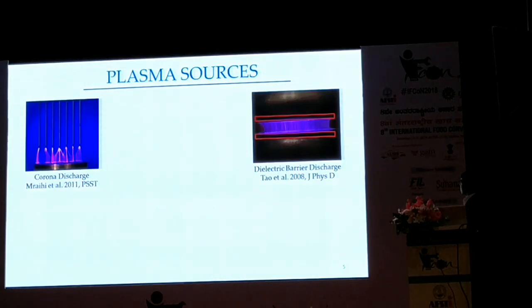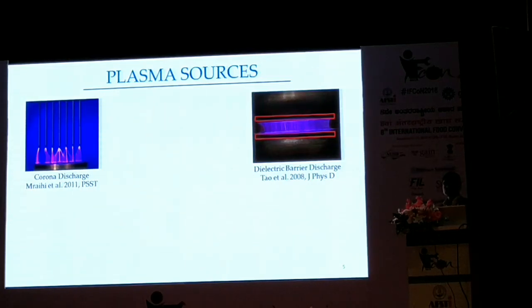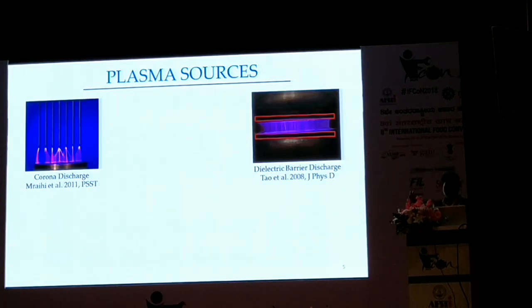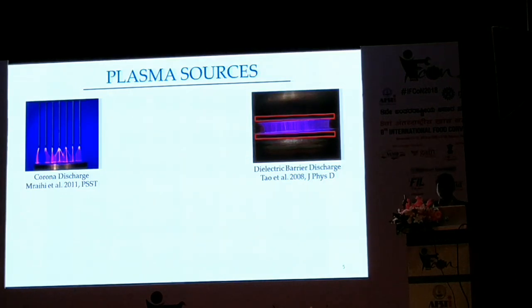In a dielectric barrier discharge, you essentially have two metal electrodes with two dielectric layers - non-conductive layers in which electrons can rearrange themselves. Without the dielectric, it's basically like shorting out - there will be a big spark and the fuse will blow. But once you introduce these dielectric layers, they limit the current and you get a nice, steady flow of electrons. It's basically a stochastic process that occurs, giving you a uniform discharge.